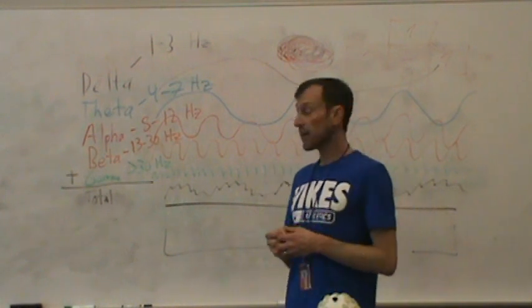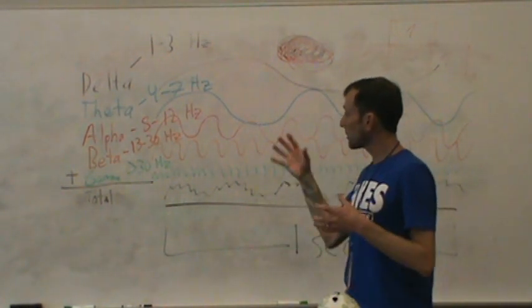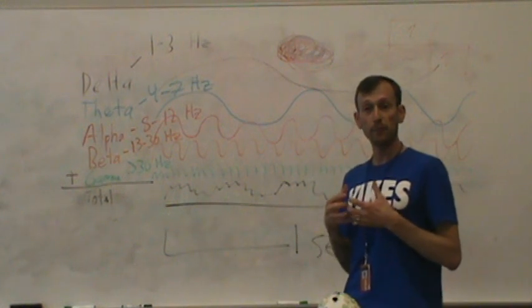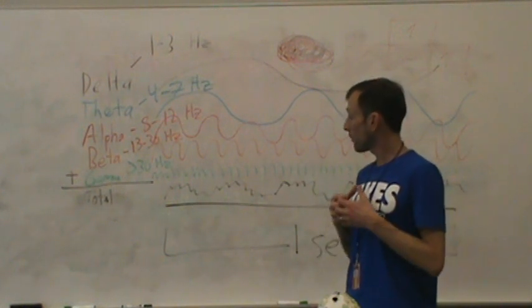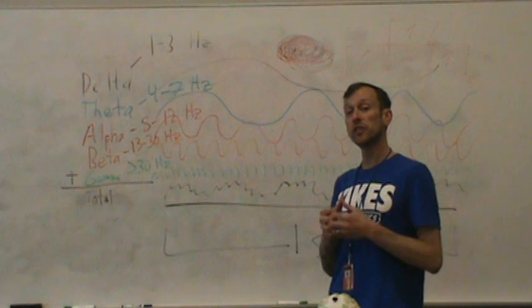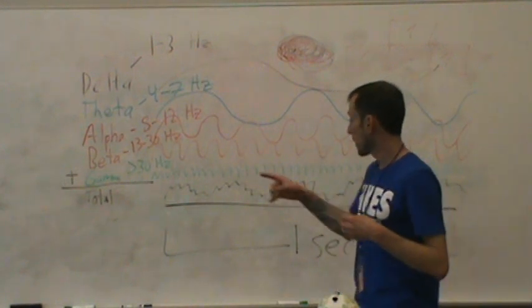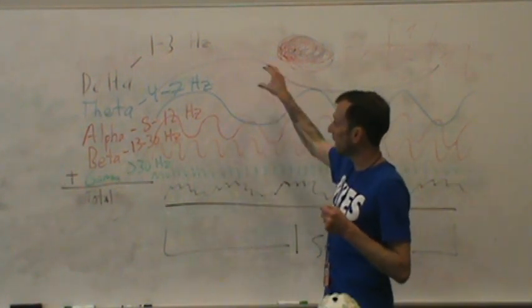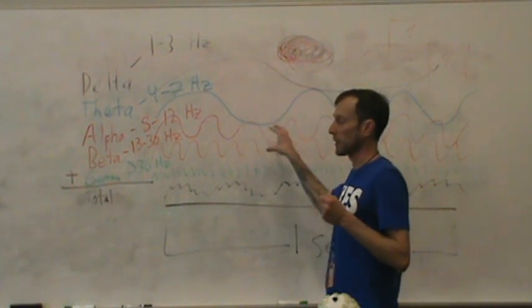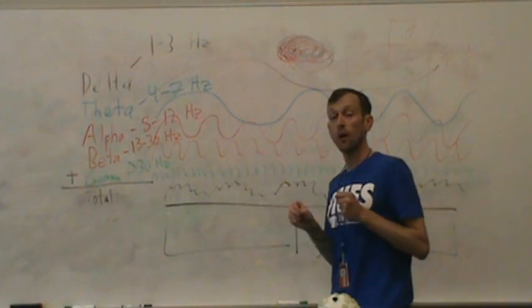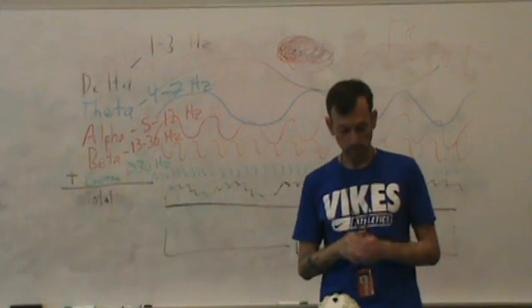So now you guys know what the five main frequencies are, and you know a bit about what they represent. And, importantly, you know why EEG researchers work so hard to record a signal and then break it down and try to figure out the different frequencies' influence on that signal.